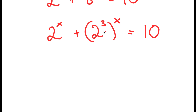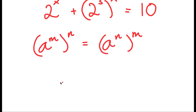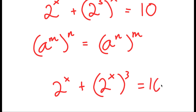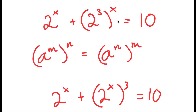Now from here, if I have something in the form a to the power of m to the power of n, this is equal to a to the power of n to the power of m. So I get 2 to the power of x plus 2 to the power of x to the power of 3 is equal to 10, because I switched the places of 3 and x.